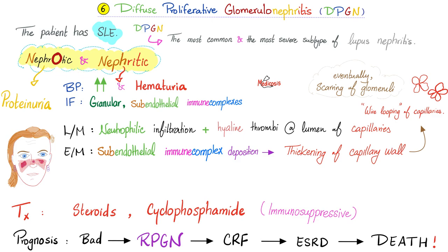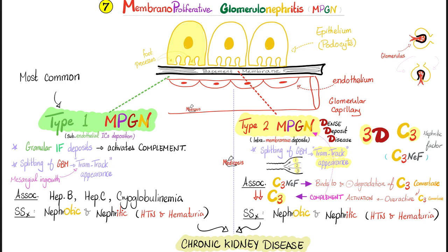Nephrotic-nephritic syndrome includes two diseases. Diffuse proliferative: you have both hematuria and proteinuria, sub-endothelial deposits, association with lupus, and wire looping of the capillaries — treat it like you treat lupus. Membranoproliferative has two types: type 1 has sub-endothelial deposits with association with hepatitis and cryoglobulinemia; type 2 goes into the membrane — the dense deposit disease — associated with C3 nephritic factor and consumption of complement, hashtag hypocomplementemia.